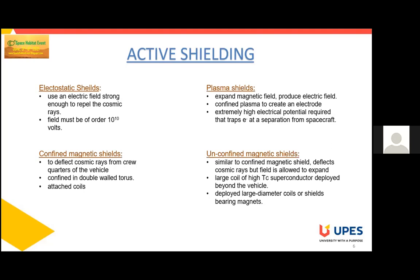Third, confined magnetic shields are used to deflect cosmic rays from the crew quarters of the vehicle, confined in a double-walled torus with attached coils. Fourth, unconfined magnetic shields are similar to confined magnetic shields in deflecting cosmic rays, but the field is allowed to expand. They use a large coil of high-temperature superconductor deployed beyond the vehicle, or large-diameter coils and shield-bearing magnets.